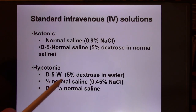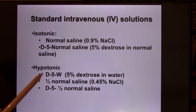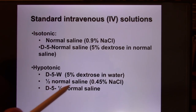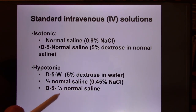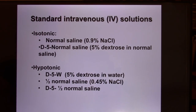Since sugar is a penetrating particle, we don't count it for tonicity — only the sodium chloride matters. So D5 half-normal saline is still a hypotonic solution because it contains only half the salt concentration, and it will make cells swell. Okay, that's it for today.